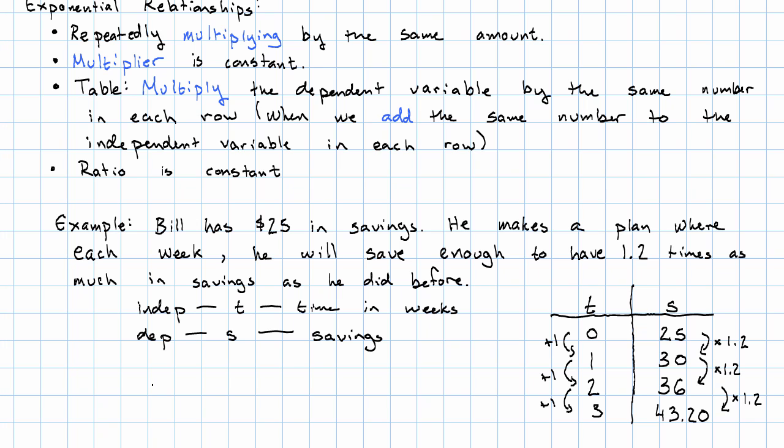What does our equation look like? His savings is the $25 he started with times, we're multiplying repeatedly by 1.2. And the number of times we're multiplying is the number of weeks. In the story, the wording suggested we're repeatedly multiplying. Each week, we'll have 1.2 times as much.